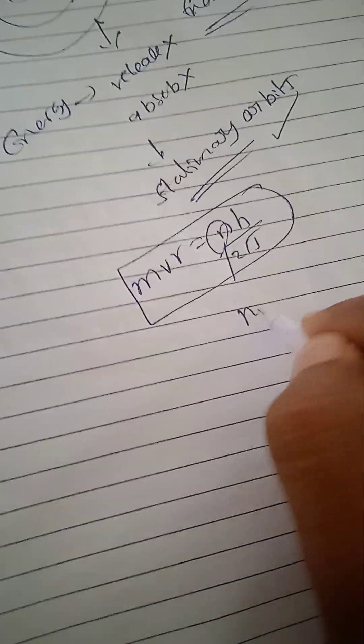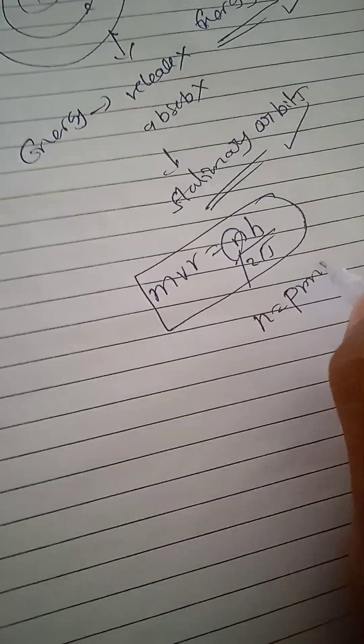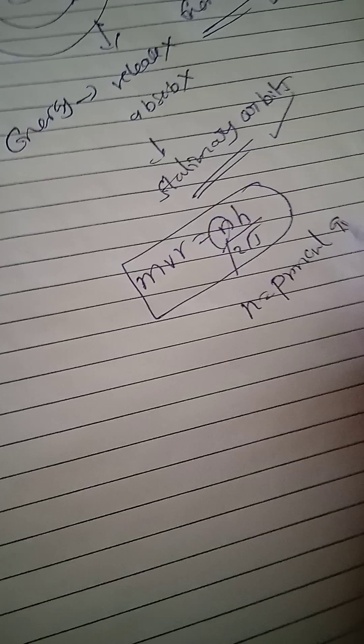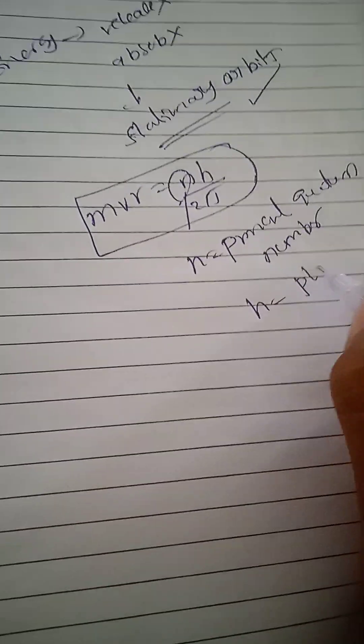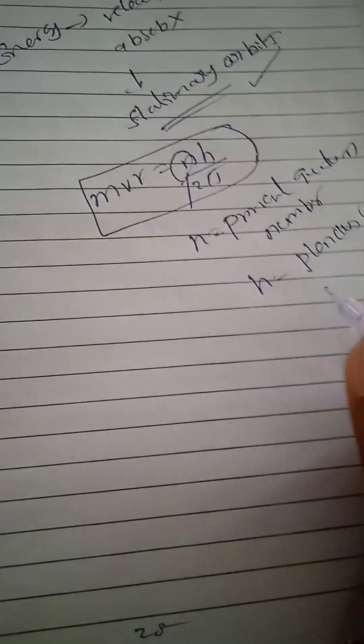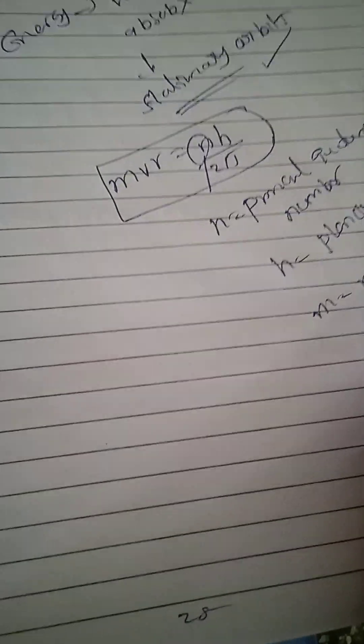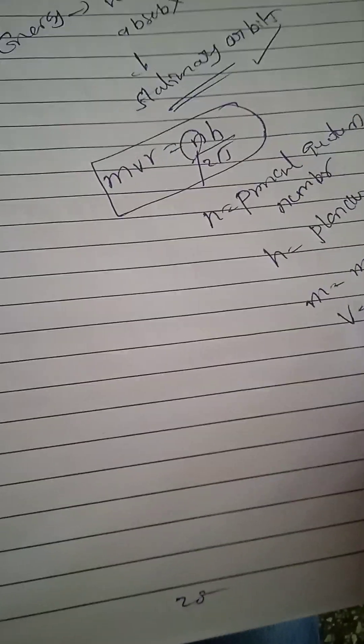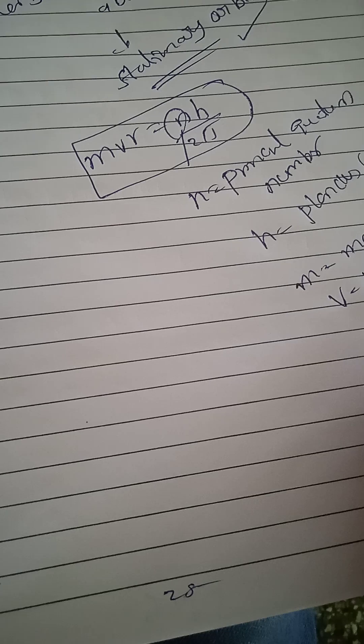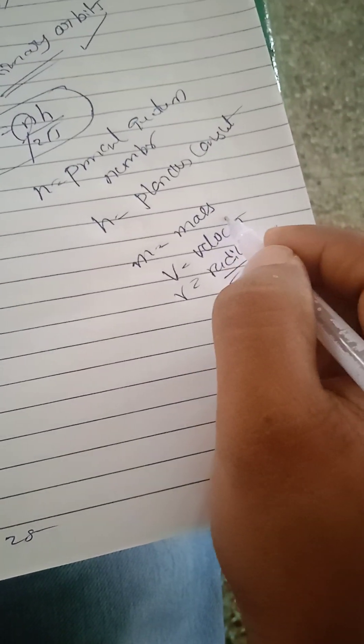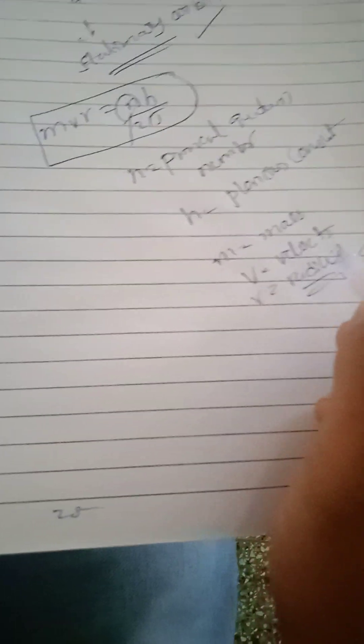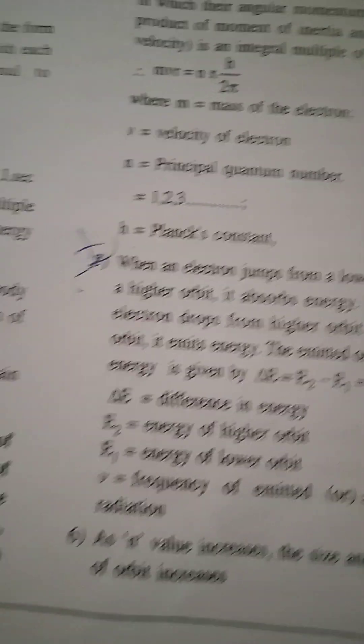N is the principal quantum number. H is Planck's constant. M is the mass of the electron. V is the velocity of the electron. R is the radius of the orbit.